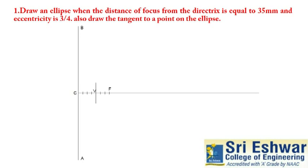Here, first part is 3. From the focus, take 3 parts: 1, 2, 3. After the third part, give this vertex point V. This is our vertex point V.